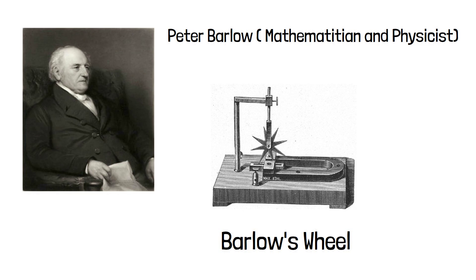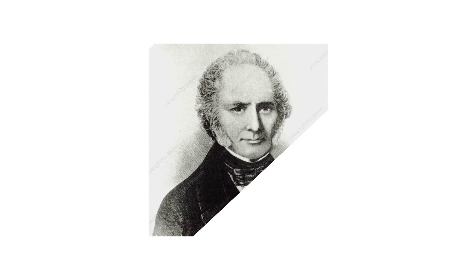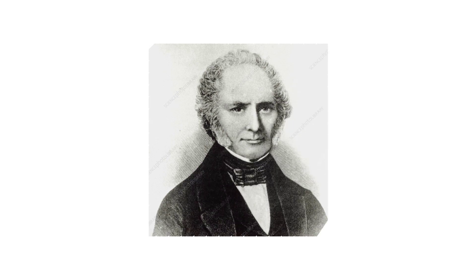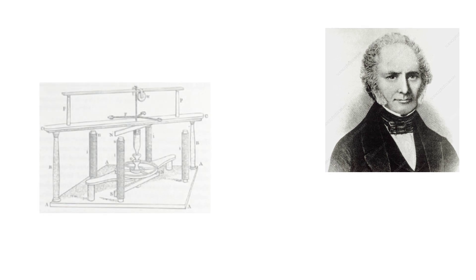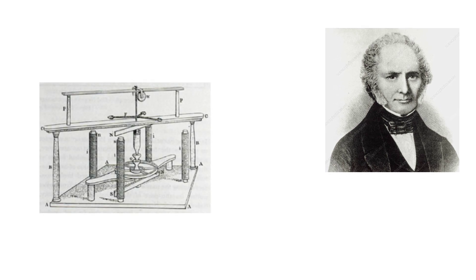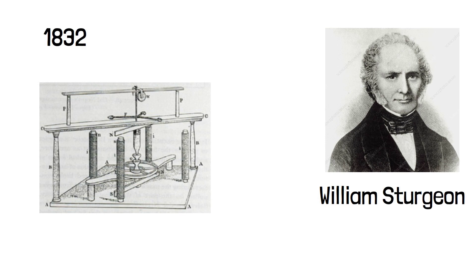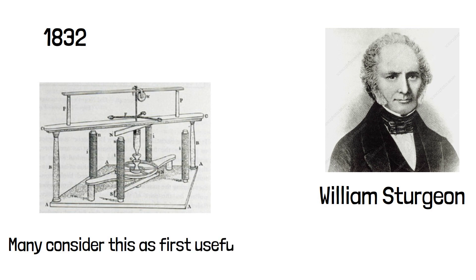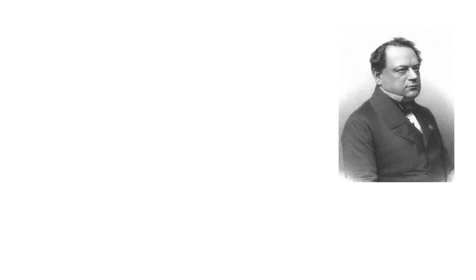The first DC electric motor capable of turning mechanical parts was invented by English physicist William Sturgeon in 1832. It had a big impact because following his work, others also started working on useful electrical motors which could be used in machinery. It is sometimes even considered the first ever useful rotating motor.